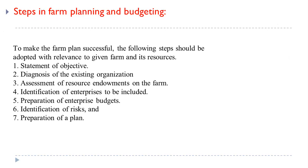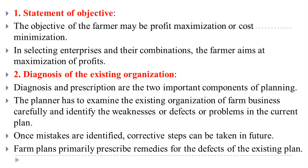A very important next topic is the steps in farm planning and budgeting — this is also asked as a subjective question in theory examinations. To make the farm plan successful, the following seven steps should be adopted: statement of objectives, diagnosis of existing organization, assessment of resource endowments, identification of enterprises, preparation of enterprise budget, identification of risk, and preparation of a plan.